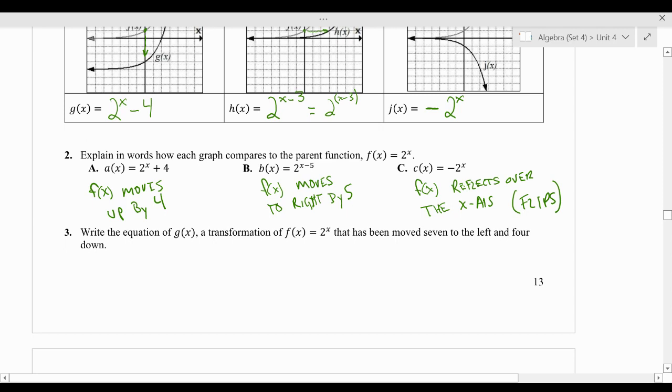So that means g of x, g of x equals 7 to the left. So I'm going to do 2 to the power of x. So 7 to the left, I know you want to say negative, but it's the opposite. So it's going to be plus, plus 7. So 7, or 2 to the power of x plus 7, and 4 down is going to be minus 4. And that, my friends, is my answer.